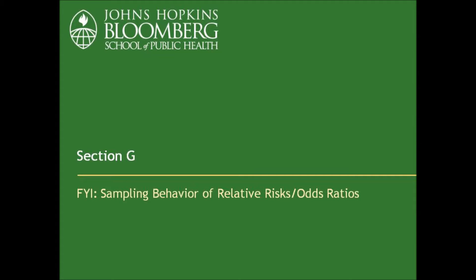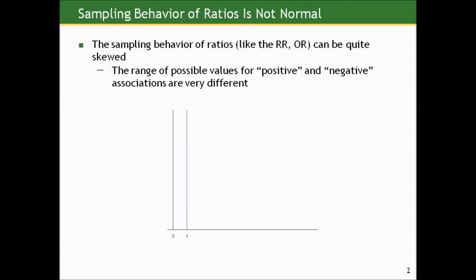It turns out the sampling behavior, the random sampling behavior of ratios like the relative risk or odds ratio, if we were to do multiple studies on the same populations with the same sample sizes randomly taken from two groups over and over again and compute multiple measures of association for each study, multiple relative risks, and look at the sampling behavior just under simple random sampling error, they can be quite skewed, not normal-esque.